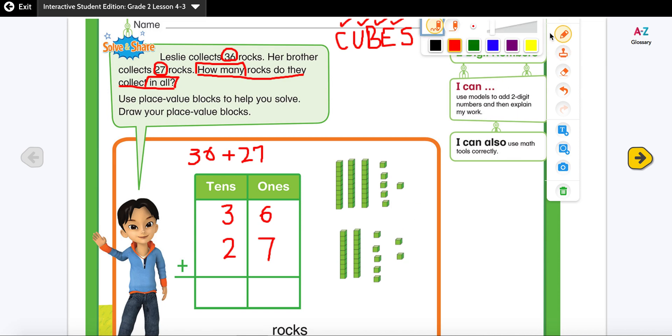So I'm going to start with my ones column. 6 plus 7. I'm going to add my ones. One, two, three, four, five, six, seven, eight, nine, ten. I will make 10 ones into one ten. I will regroup these 10 ones and change it into one ten.